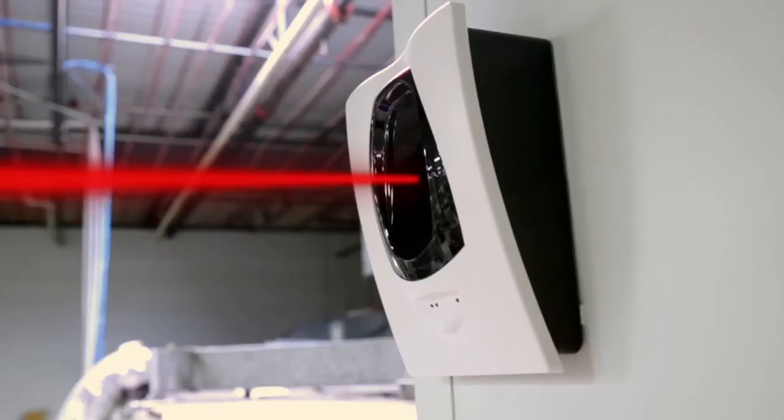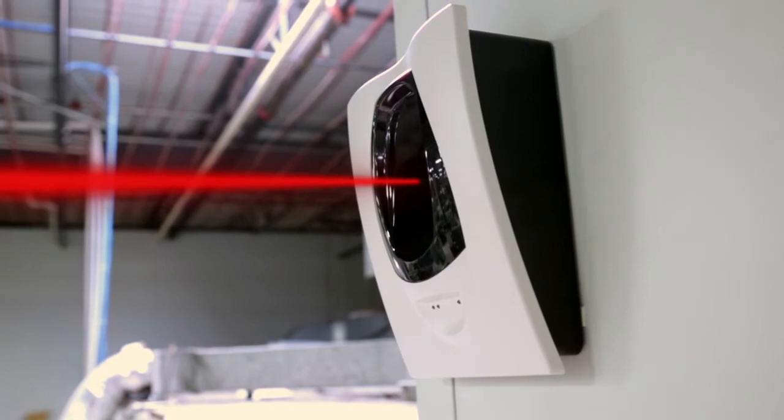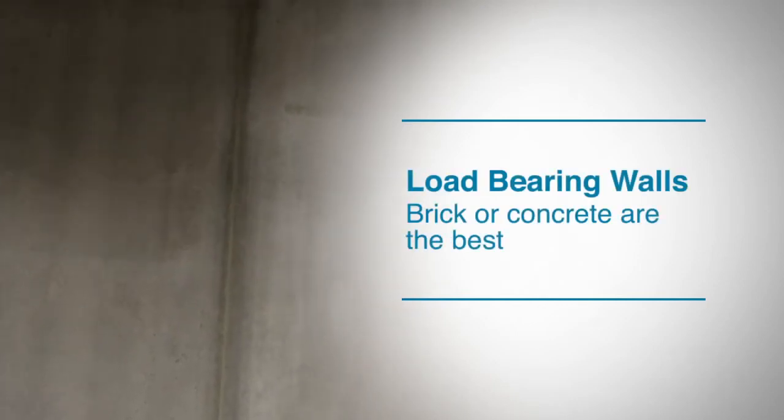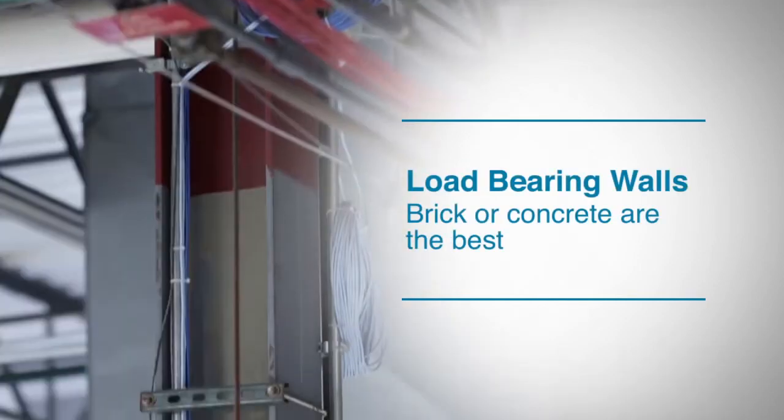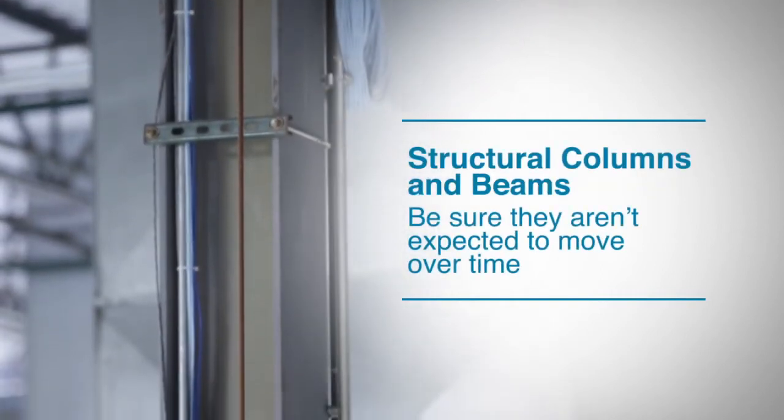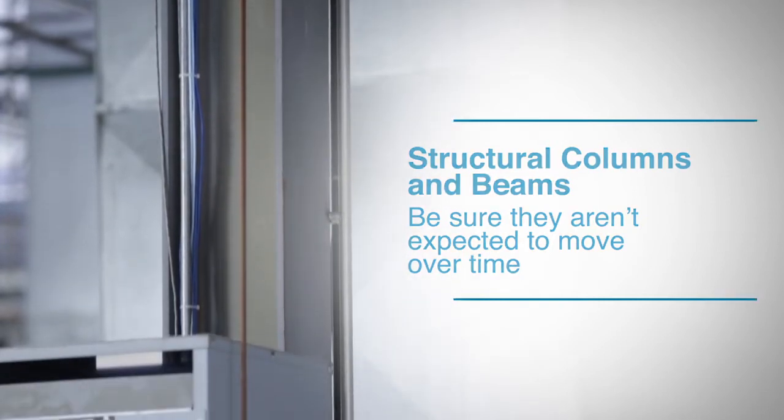Beam detectors require a stable mounting surface. Even small movements are amplified tremendously when shooting a beam hundreds of feet across an open space. Load bearing walls, particularly if they are brick or concrete, make the best mounting surfaces. Structural columns and beams can work well too, as long as they aren't expected to vibrate or move over time.